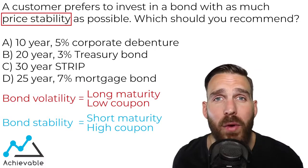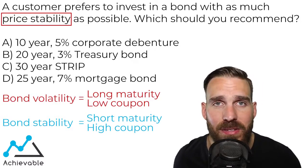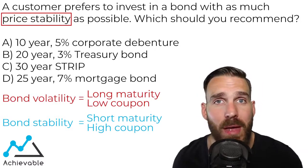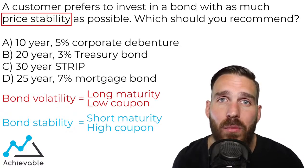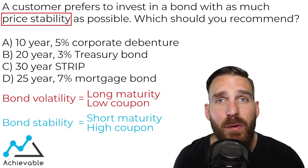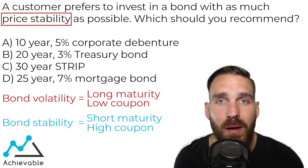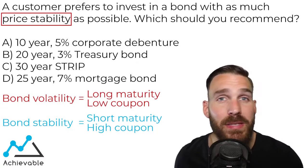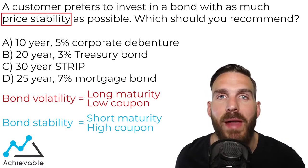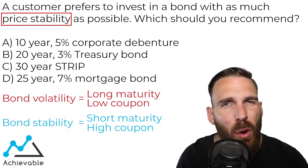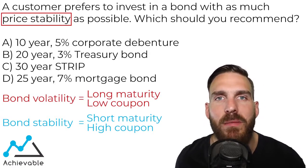There is a wide range of maturities in front of us. At the low end we have 10 years, and at the high end we have 30 years. The 10-year bond is the one with the shortest-term maturity, so that likely is the best answer. When it comes to bond price stability or volatility, maturity is the most important aspect. The coupon only comes into play if two bonds have similar maturities.